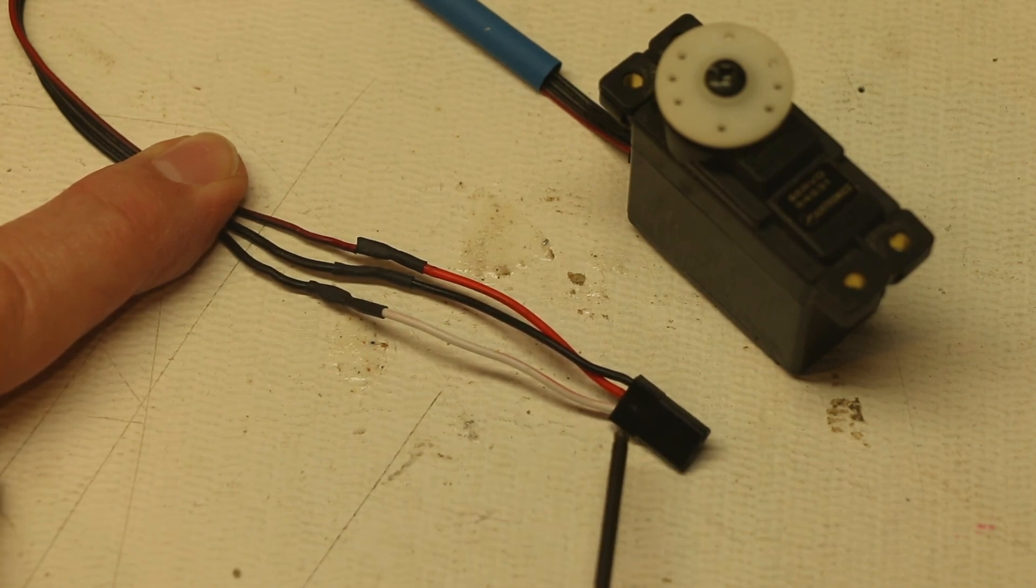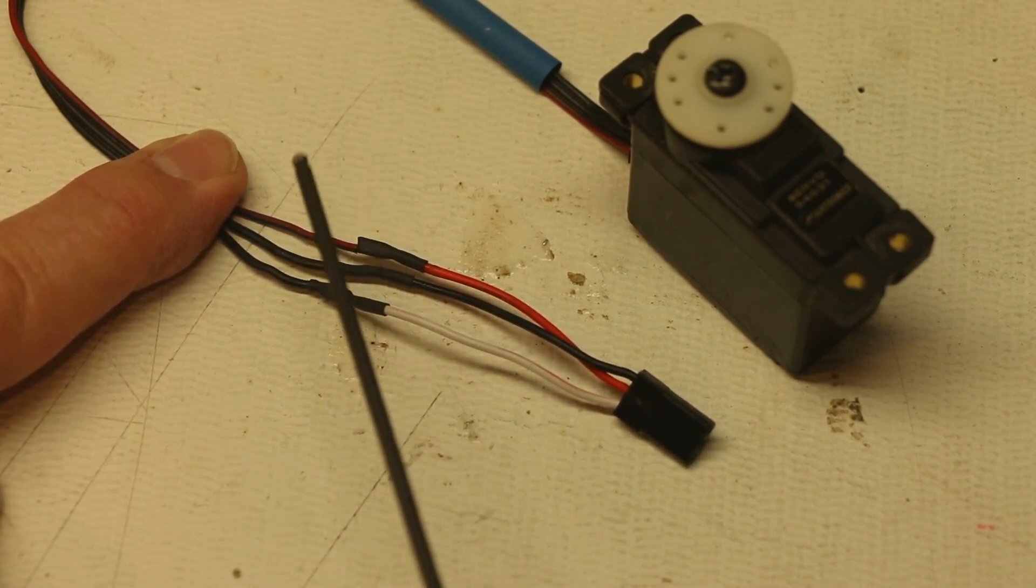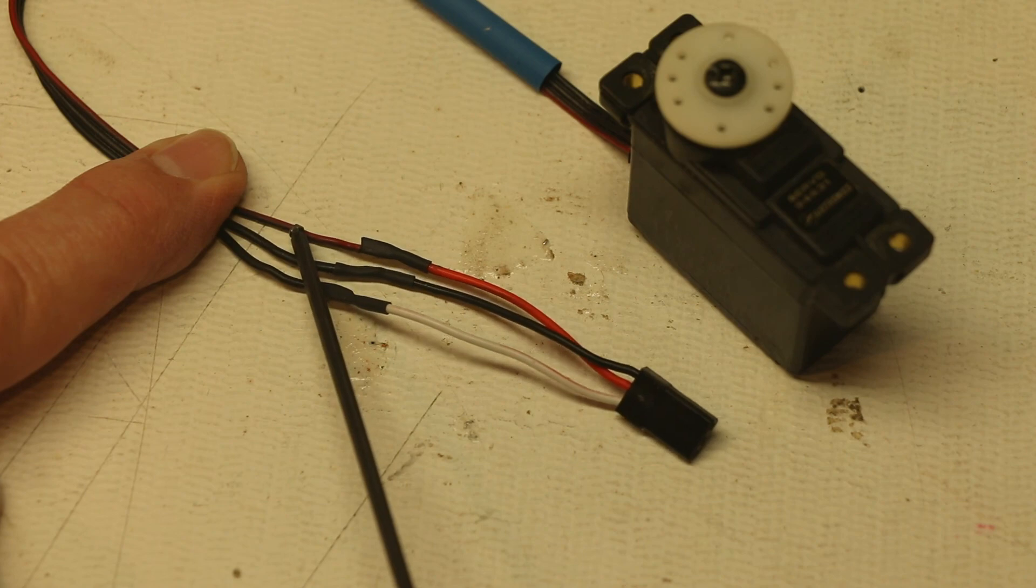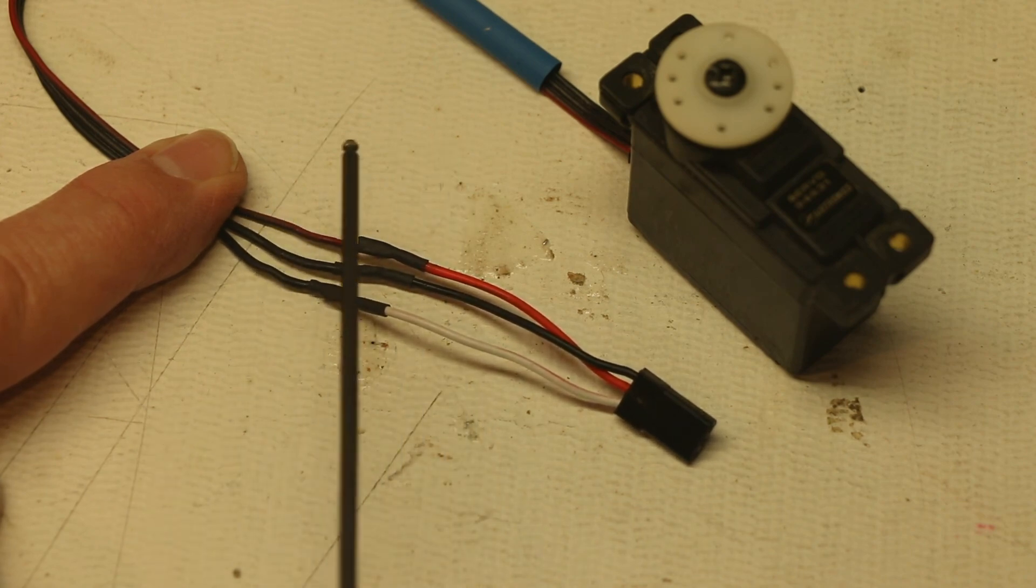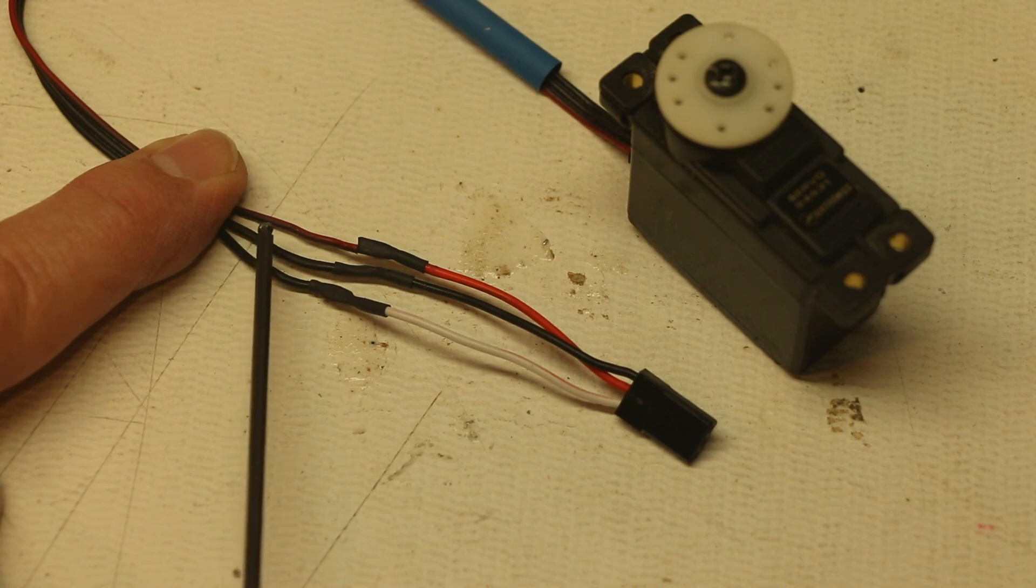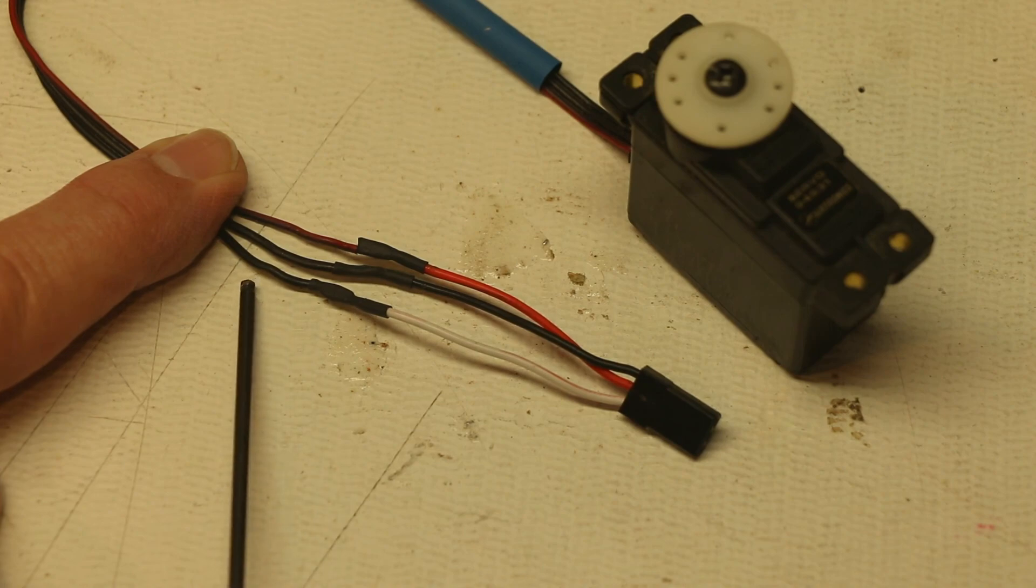Now you notice that on this connector it goes signal, power, ground. However on the Airtronics it goes signal, ground, power. So the red wire on the Airtronics servo goes to the red wire on the new connector. The ground wire goes to the middle wire. The signal wire goes to the outside black.